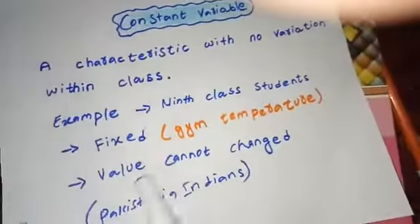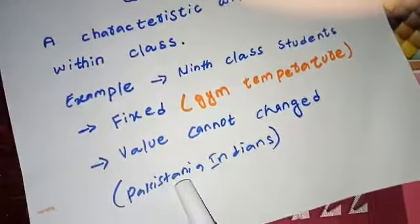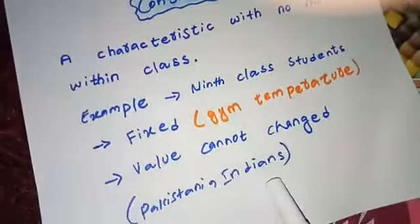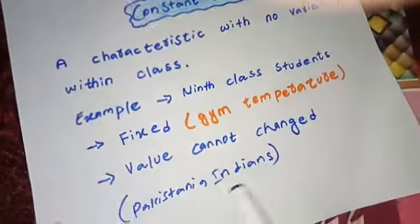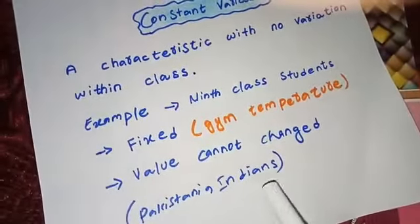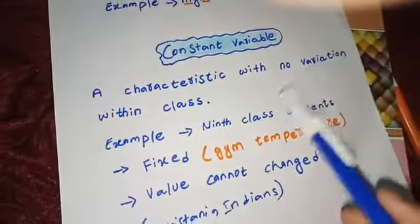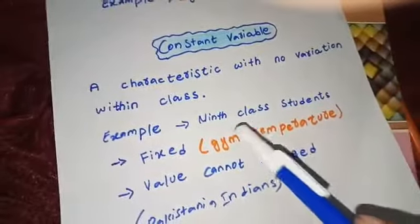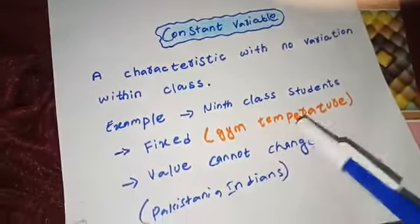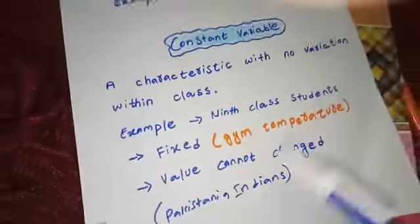Another example: the value cannot change — if you are Pakistani or Indian, you are called Pakistani or Indian. If you live in India, you are called Indian. This is a constant variable; there is no variation. One term is used for all, like 'ninth class student,' 'gym temperature,' or 'Pakistani' and 'Indian.'